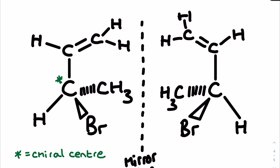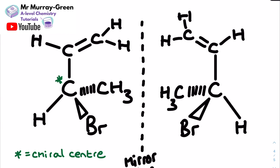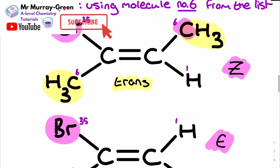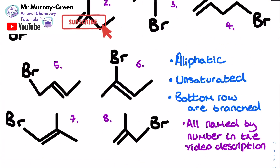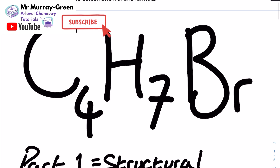If you'd like more videos about chiral centers on alicyclic structures or more detail about optical isomerism in general, there'll be links at the end of this tutorial, in the video description, and at the top of the screen if you click the little i. Thank you very much for watching — if you found this video helpful please give it a like before you go, consider subscribing to stay updated, and until next time, happy revising.